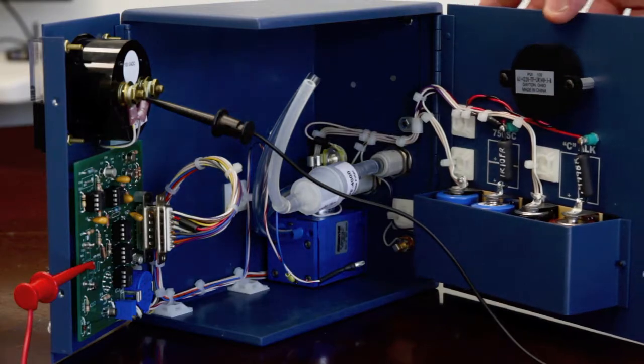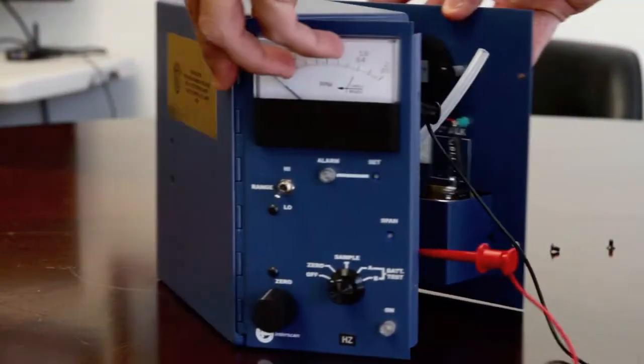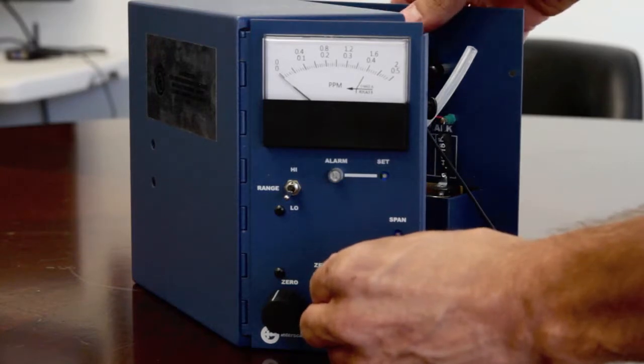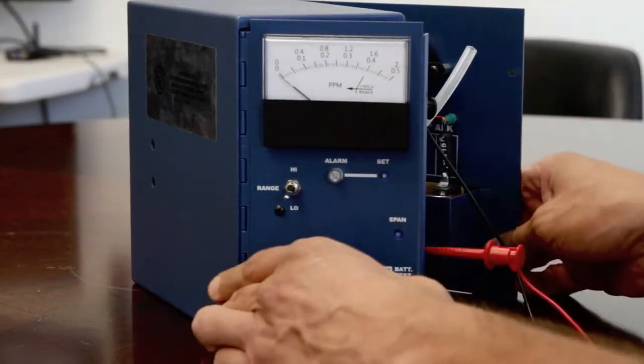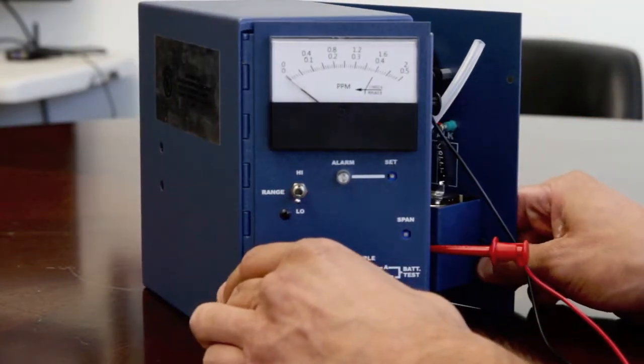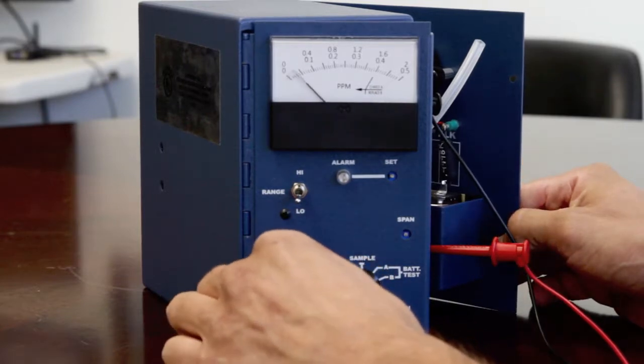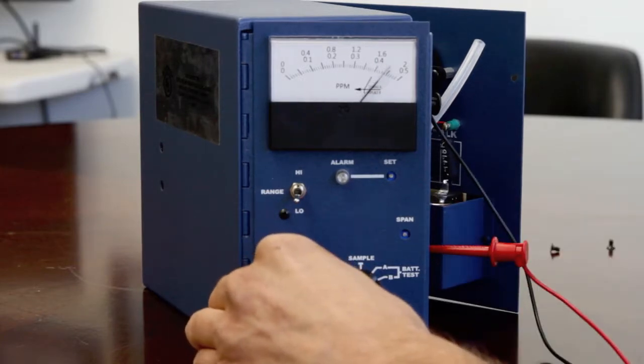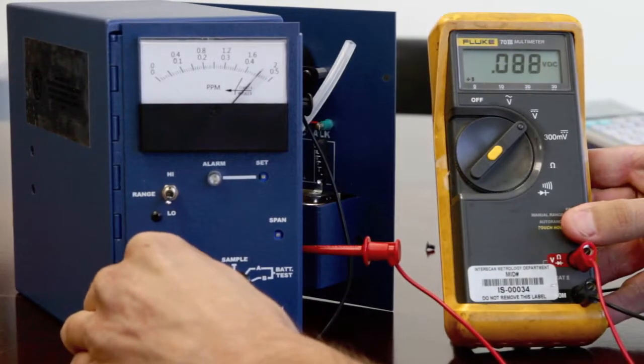Now, return to the front of the instrument and switch to zero. Adjust the zero control upscale so that the digital voltmeter, not the analyzer meter, reads a number that matches the ECS certificate.